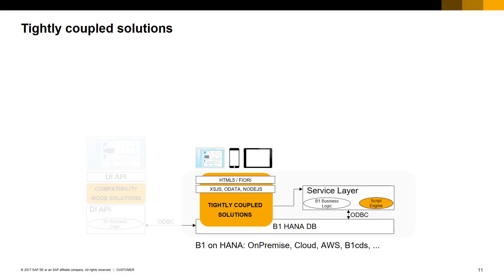The SAP HANA server and code can be deployed in an SAP Business One cloud hosted by a partner, an on-premise SAP Business One implementation, as well as SAP Business One cloud hosted by SAP using AWS, etc.